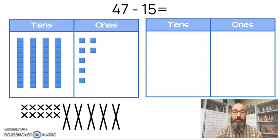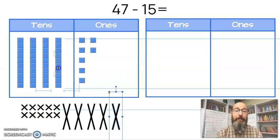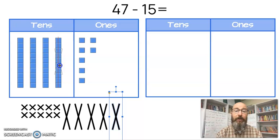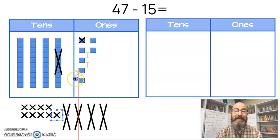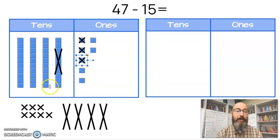So what you would do is you would start with your question, 47 minus 15. And you would start taking those away. So you would take away, I see one ten. So I would take away my one ten. I'm going to get rid of it. And it's gone now. And then I'm going to get rid of 5 ones. So I'm going to take away 5 ones. I'm going to mark them out. One, count with me. Two, three, four, five.